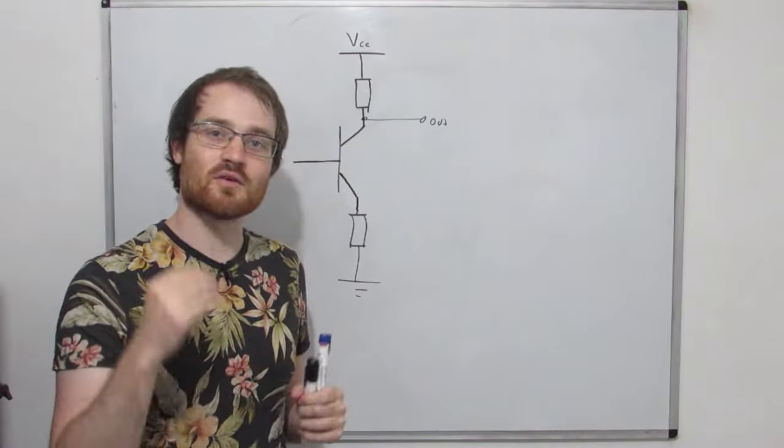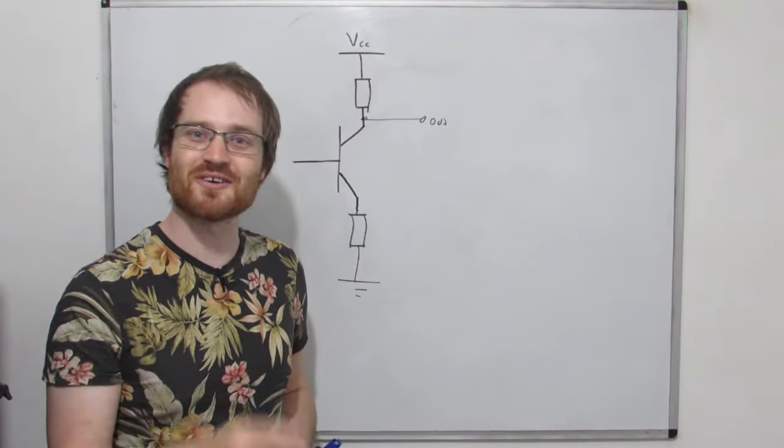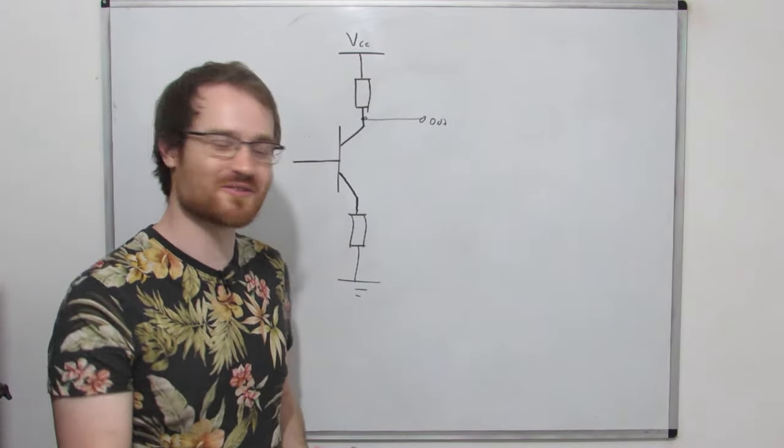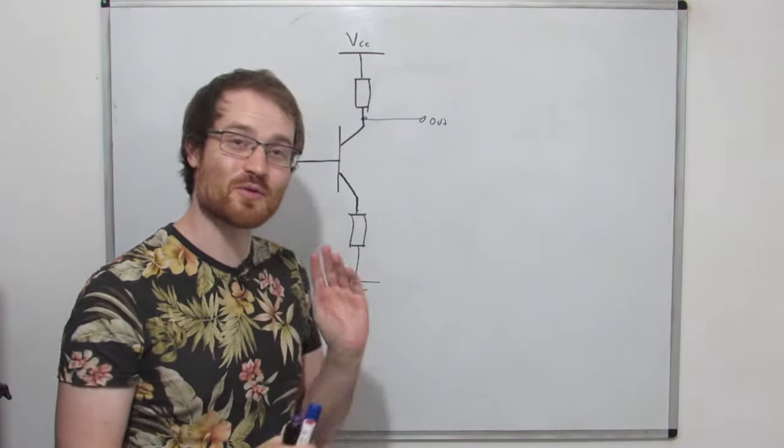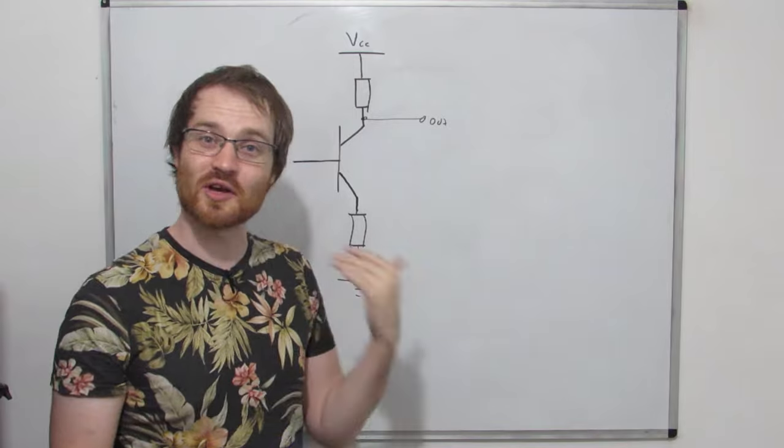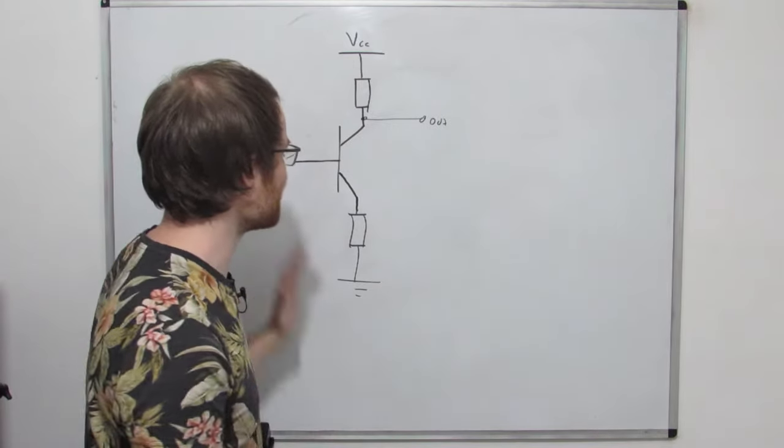So how do these circuits work, how do we calculate the gain, what's going on with this? Let's go down to the whiteboard and have a look. I'm going to mention it a lot, so I just want to make sure we're all on the same page and do a very quick recap on a common emitter amplifier.